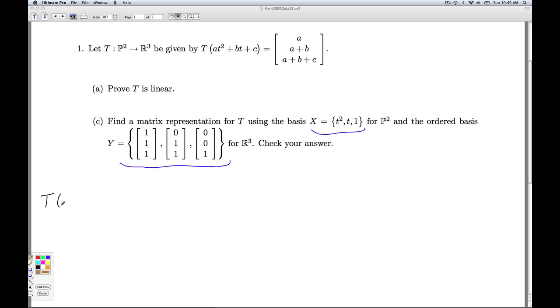Well, just like before, we take the first basis vector, T squared here, and we take T of T squared. We use this formula, and we get the vector 1, 1, 1. But this is the vector as it's expressed in the standard basis for R3. We have to find C1, C2, and C3.